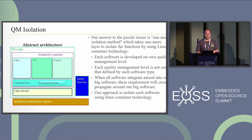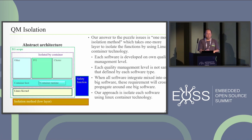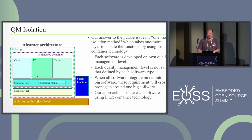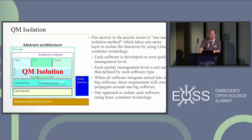We have defined the QM isolation method as our answer to the puzzle issue. It takes one more layer to isolate functions using Linux container technology. Each software is developed at its quality management level — the instrument cluster part at cluster-level QM, and the IVI side at IVI-level QM. Our approach is to isolate each software stack using Linux container technology. We call this concept QM isolation.